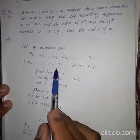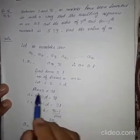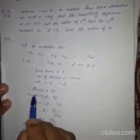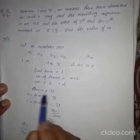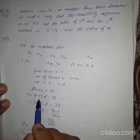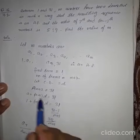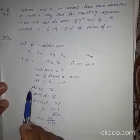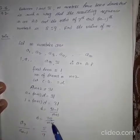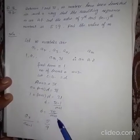So M plus 2th term, that is using formula A plus M plus 1 into D, and it is equal to 31. Put value of A and calculate D. It is 30 upon M plus 1.